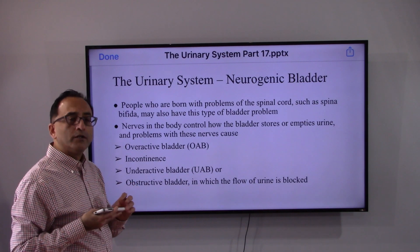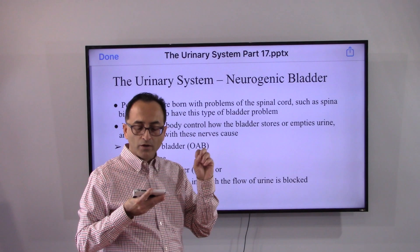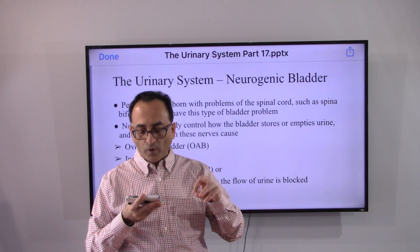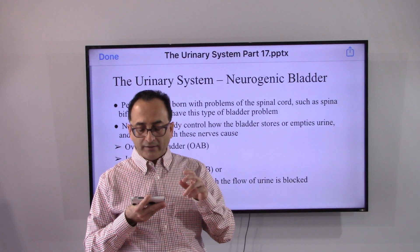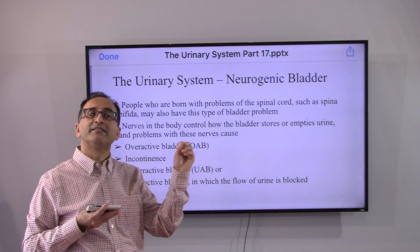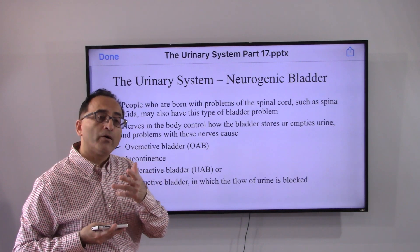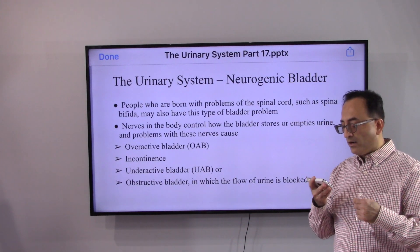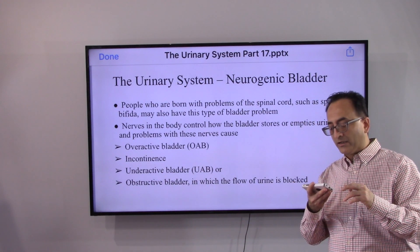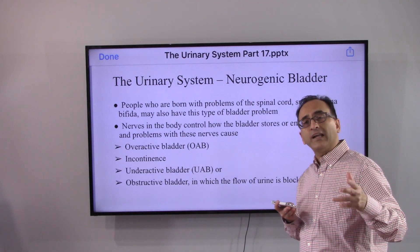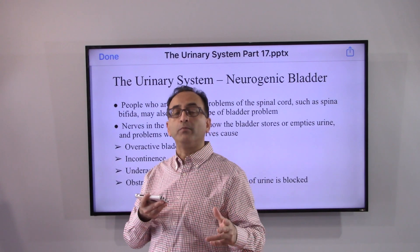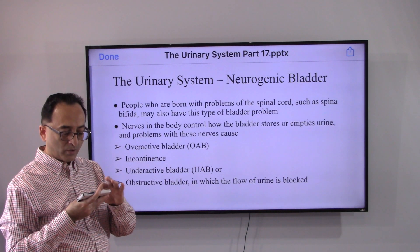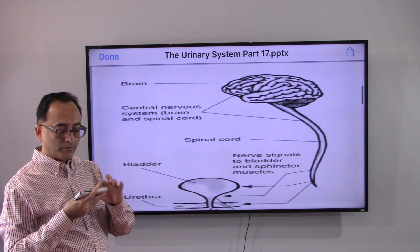The nerves in the body control the bladder — how to store, how to empty, when to empty — and problems associated with that can be related to the nerves giving signals to the bladder. You may end up having overactive bladder, incontinence with leakage, underactive bladder, or obstructive bladder in which the flow of urine is blocked.